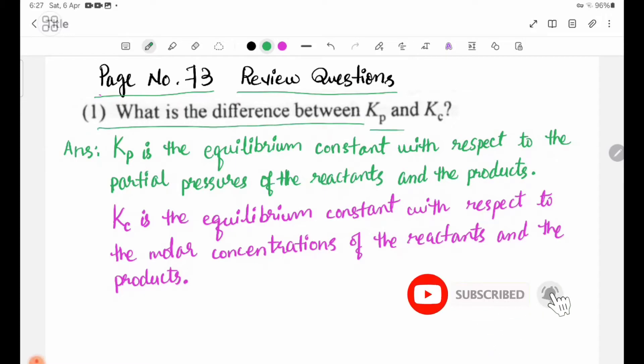What is the difference between KB and KC? KB is the equilibrium constant with respect to the pressures of the reactants and the products.